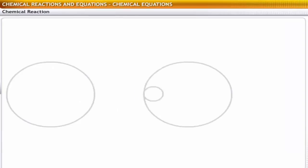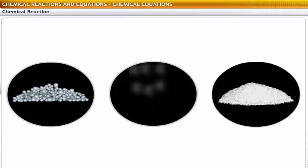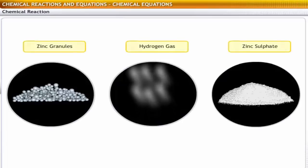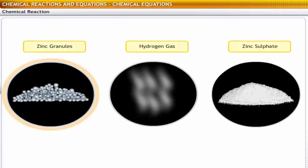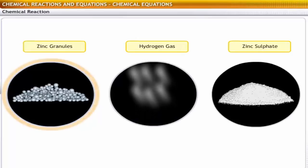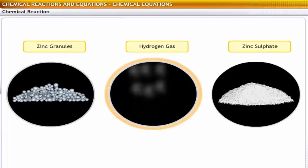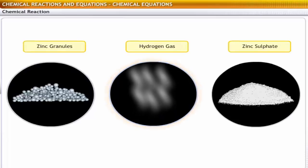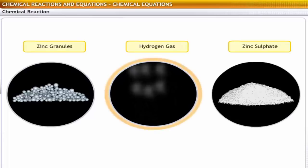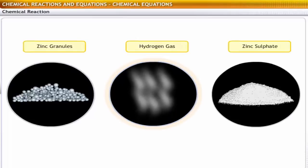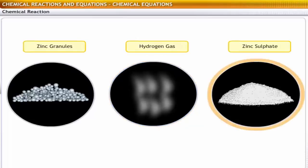Therefore, as you saw in this experiment, the color of zinc changed during the reaction. That is, there was a change in physical properties. The reaction also resulted in the evolution of a gas — that is, the form of the reactant changed. Zinc reacted with sulfuric acid to form zinc sulfate, a salt. Thus, the composition of the reactants changed.